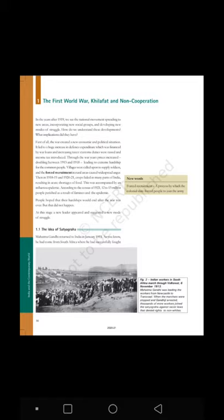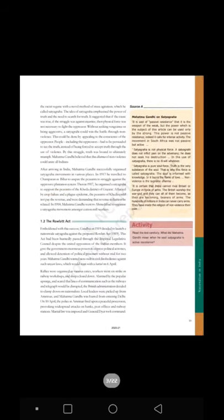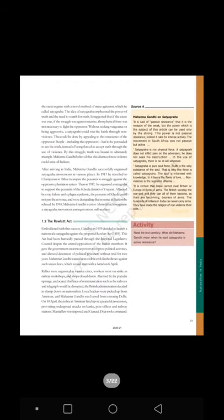People hoped that their hardships would end after the war was over, but that did not happen. At this stage, a new leader appeared and suggested a new mode of struggle. The Idea of Satyagraha — Mahatma Gandhi returned to India in January 1915. He had come from South Africa, where he had successfully fought the racist regime with a novel method of mass agitation which he called Satyagraha.